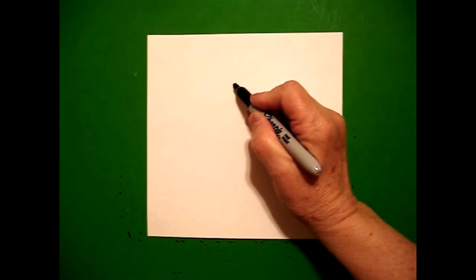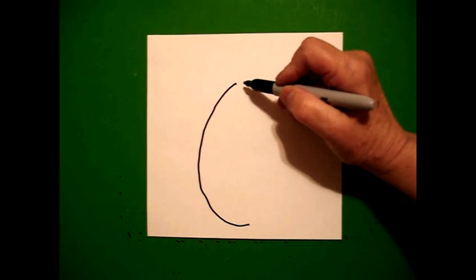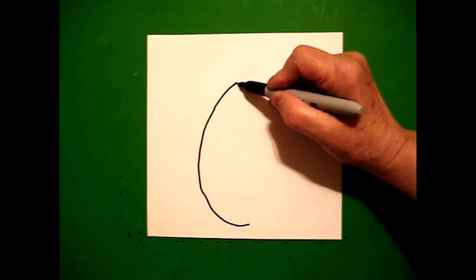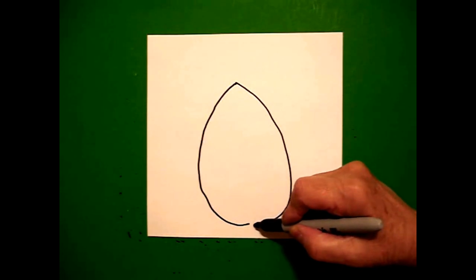And from that dot, I'm going to draw a slightly curved line down and stop. Come back to the dot, draw me a slightly curved line down, connect.